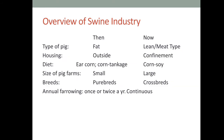Here we compare the swine industry before and now. As a type of pig, before they were fat; now they are lean or meat type. Housing was outside before, but now pigs are in confinement. In diet or feed, before they ate ear corn and corn tankage, but now swines are fed on corn-soy feeds.